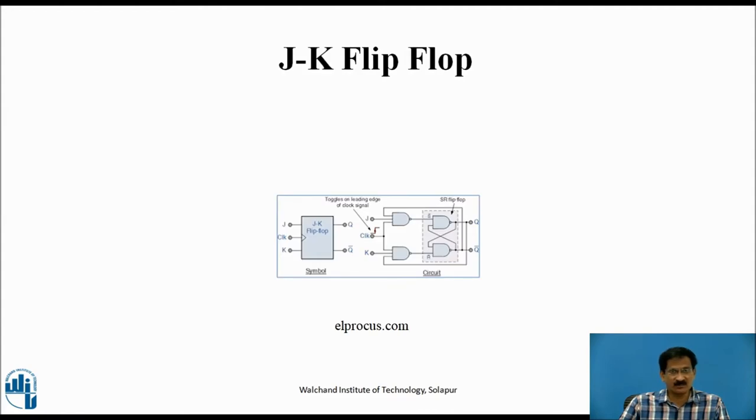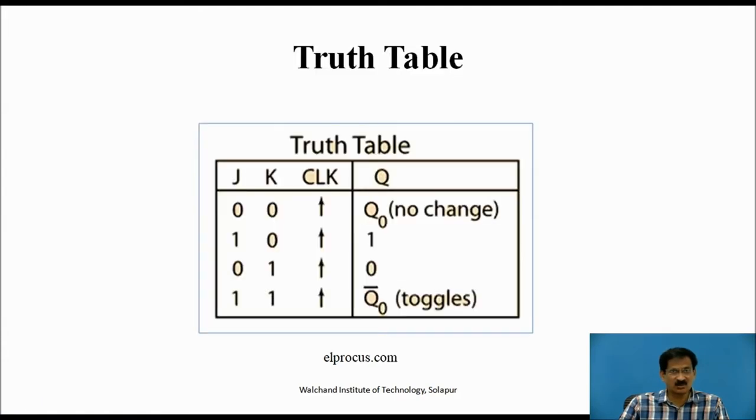So this is the JK flip-flop. The drawback of the SR flip-flop when S and R both equal 1 is eliminated in this JK flip-flop. In the JK flip-flop, which is similar to the SR flip-flop, for both J and K equals 0, the output is no change. J equals 1, K equals 0, output is 1, like a set condition. J equals 0, K equals 1, output is 0, reset condition.